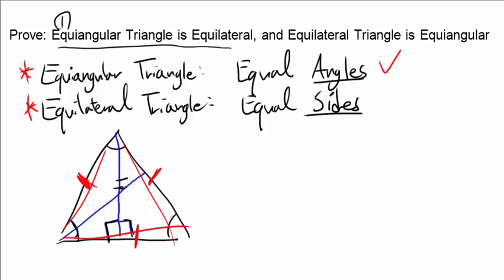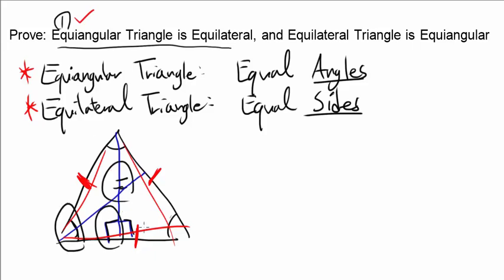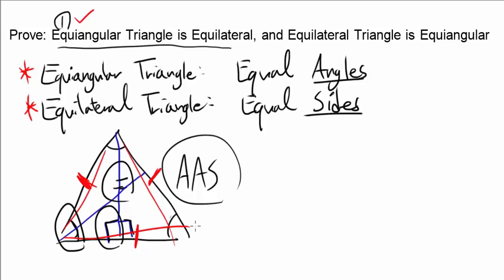So the first part is done. If you're wondering how we know these two triangles are congruent — you have an angle, an angle, and a side. Whenever you have AAS or ASA, you know the triangles are congruent, because there is only one triangle that can be made with the same two angles and the same one side, corresponding ones of course.